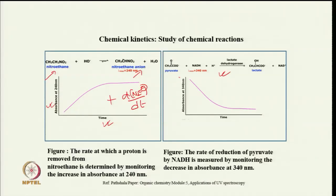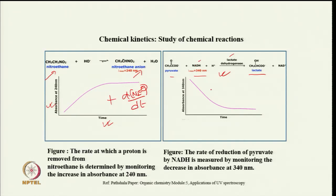We can also look at the kinetics of reactant consumption. For example, in the reaction pyruvate + NADH → lactate (catalyzed by lactate dehydrogenase), we monitor absorbance at 340 nm which is due to NADH. As expected, the absorbance decreases with time, and this signal is used to track the kinetics of the reaction.